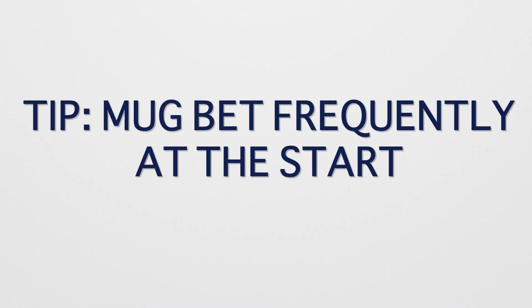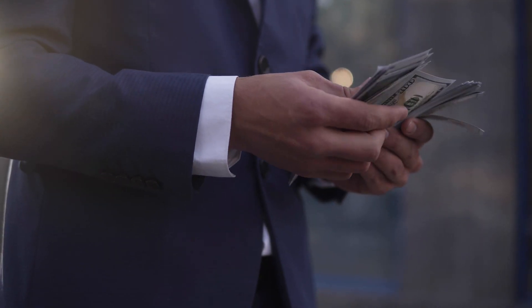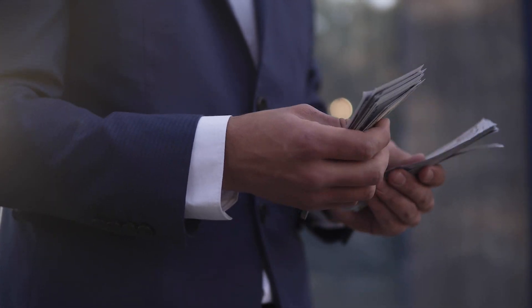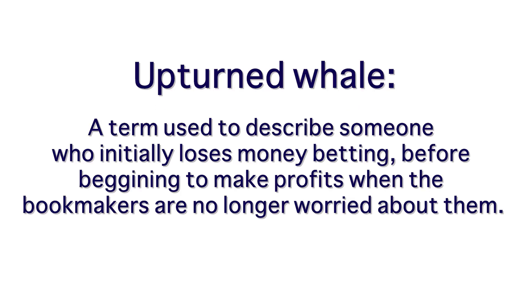Generally whenever I open a betting account, I recommend people start off with mug bets only. In the initial stage, bookmakers won't have any idea what kind of bettor you are, so that first bit of information is very meaningful to them for classification. If you do a lot of mug bets early, you'll be put in the nothing-to-worry-about category, and then later when they stop monitoring you, you can do more positive EV and arbitrage bets that will actually make you a lot of money. You're sacrificing a little money at the start to make a lot more later.